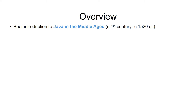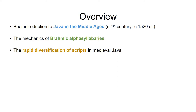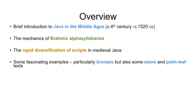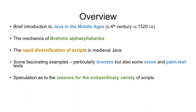I'm then going to talk a bit about the mechanics of Brahmic alpha-syllabaries, which are the kind of scripts that were used in Java, in fact across Southeast Asia until modern times. Then I'll talk about the rapid diversification and indigenization of scripts that happened in medieval Java, especially after the 10th century. I'll show you some quite fascinating examples, particularly the bronzes, but also some palm-leaf texts and copper plates.